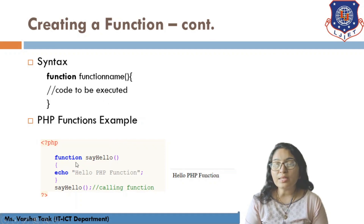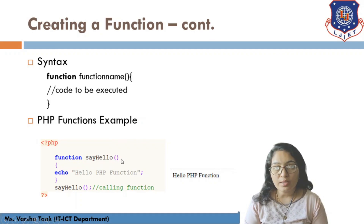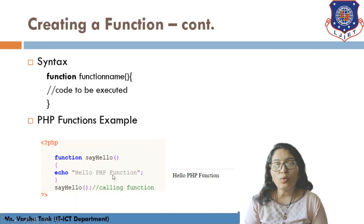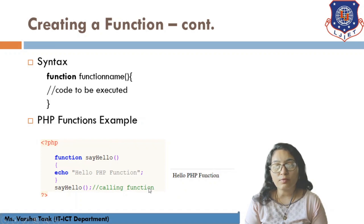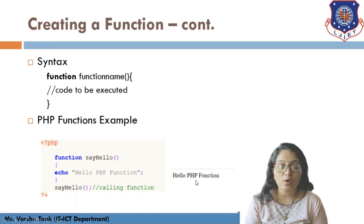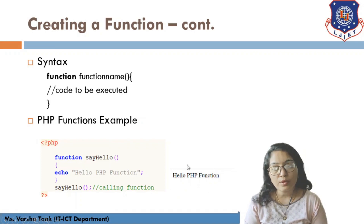For example, 'function sayHello()' — here 'function' is the keyword and 'sayHello' is the function name followed by open and close parentheses. Inside, you write 'echo hello php function'. To call it, just write the function name with its parentheses, and it will output 'hello php function'.